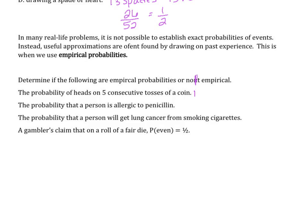The probability of heads on five consecutive tosses of coins. This one would be not empirical because we can create statistical data by actually finding the probability of heads.